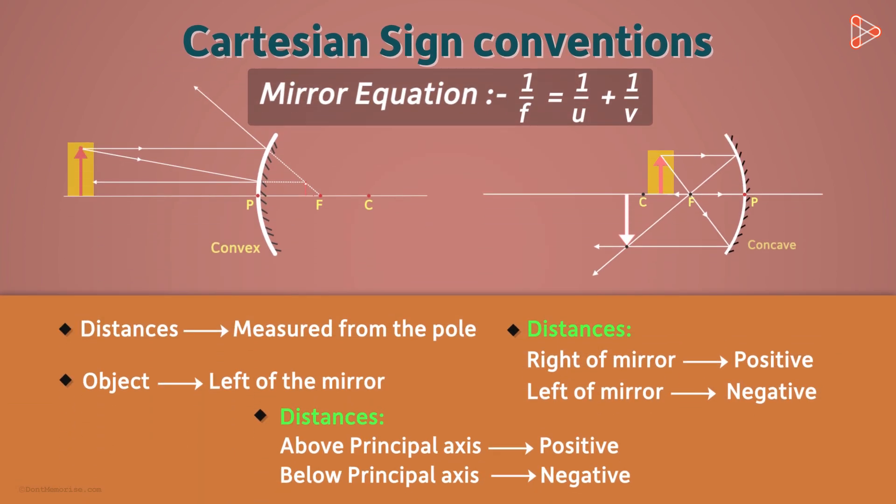The object is always placed to the left of the mirror. Distances are always measured from the pole. Distances to the right are positive and to the left are negative. And distances above the principal axis are positive and below it are negative.